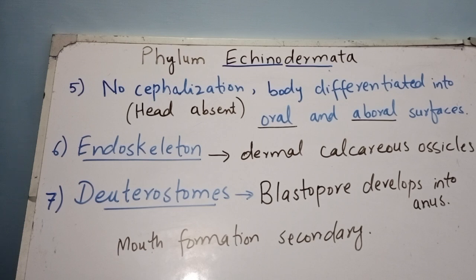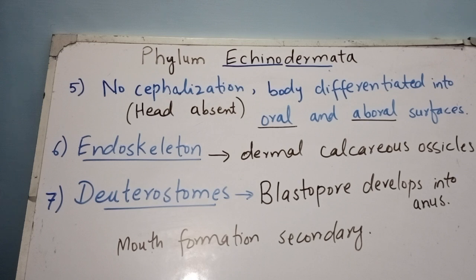Echinoderms are deuterostomes. During embryonic development, an opening forms during blastulation known as the blastopore. When this blastopore develops into the anus, such animals are known as deuterostomes. In echinoderms, the blastopore first develops into the anus and mouth formation is secondary. Deuterostomy is also a chordate feature shared by echinoderms.